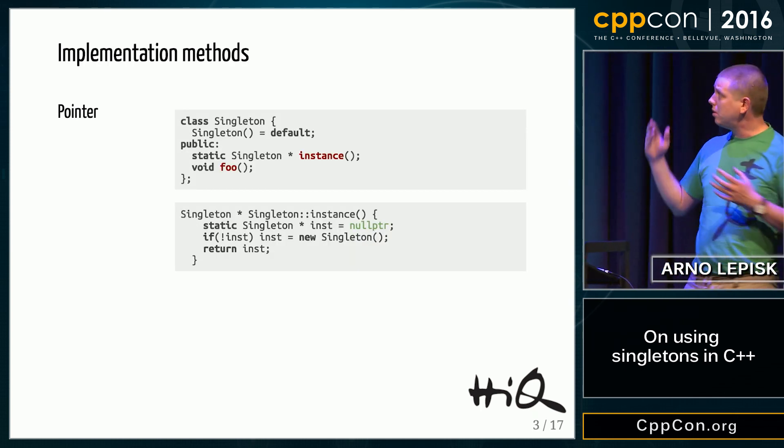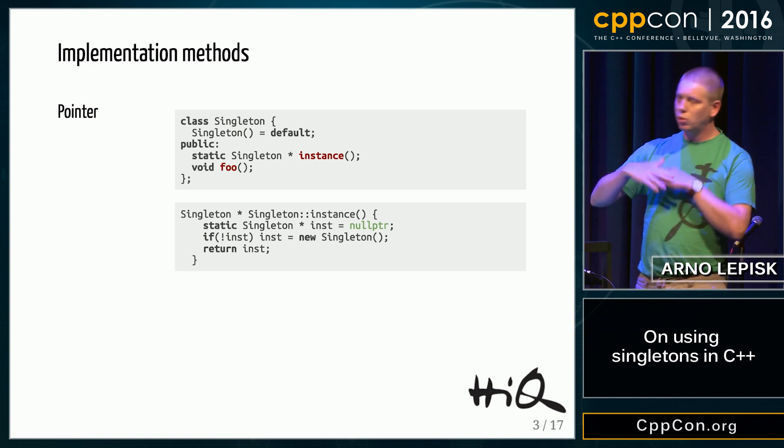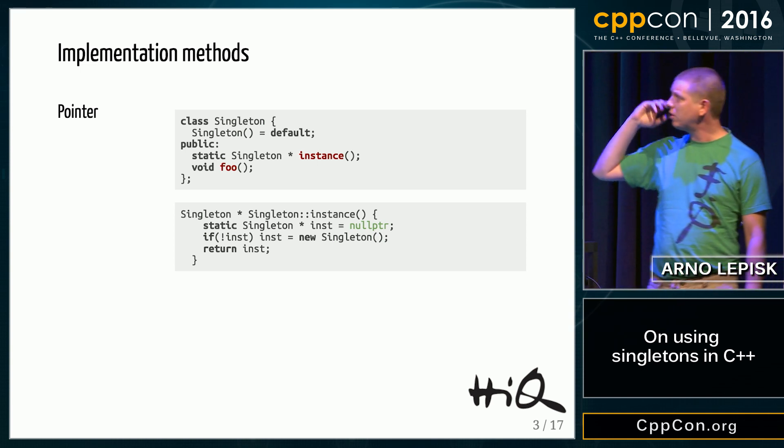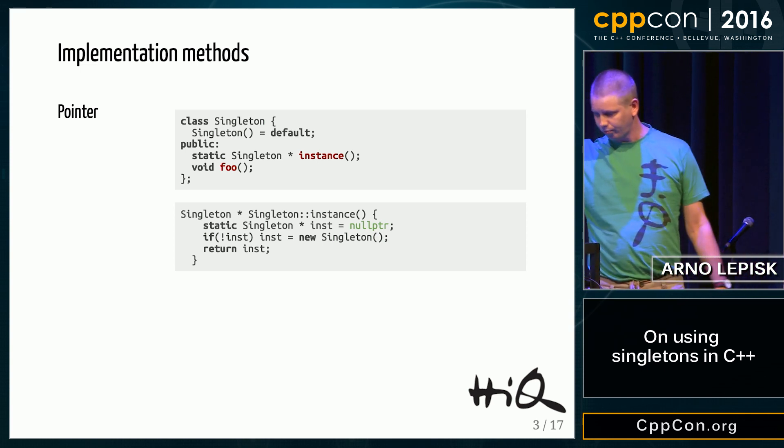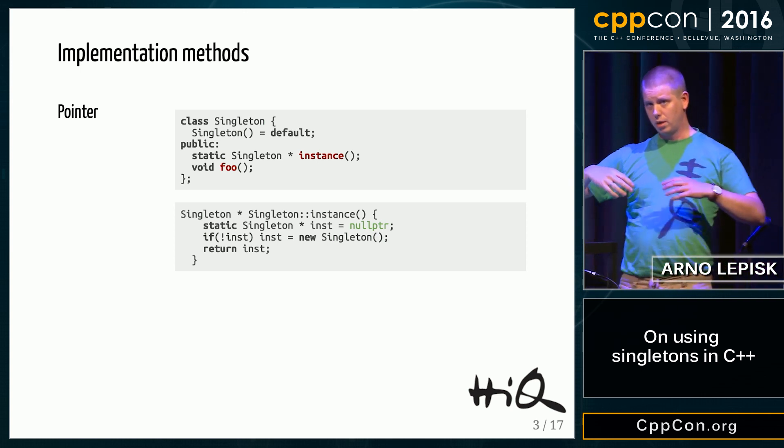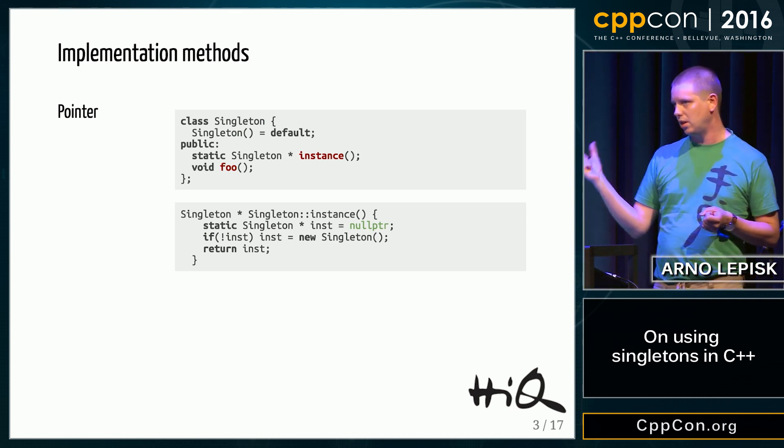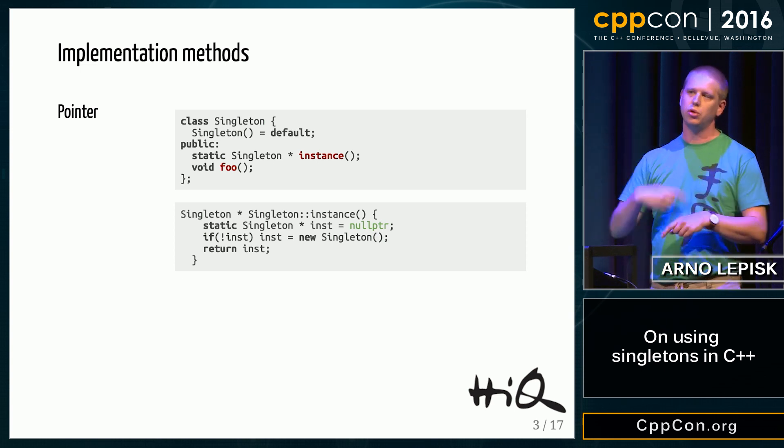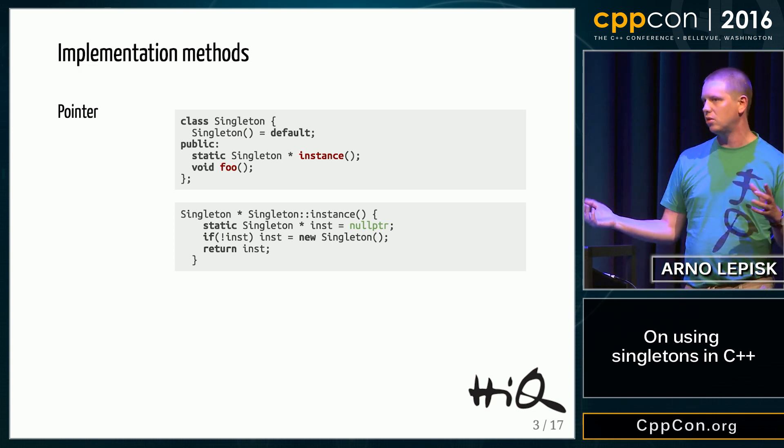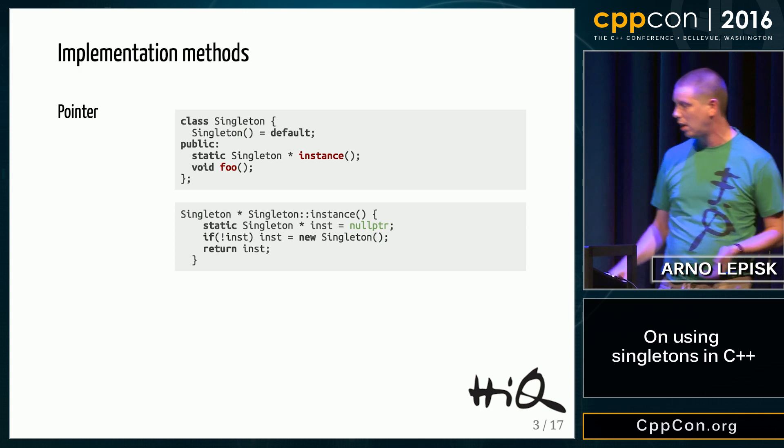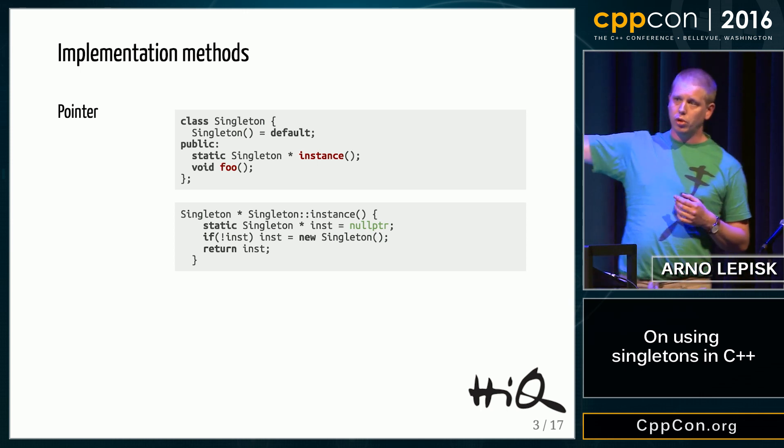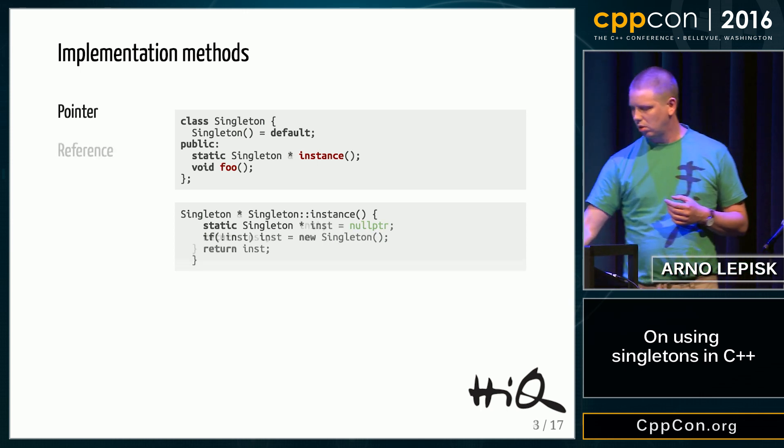Okay, how do we implement this? If we just do an internet search for singletons in C++, you'll probably find something like this: you have a class with private constructors and just a static instance method that you use to get an instance of the singleton so you can use it. It either returns a pointer or a reference.